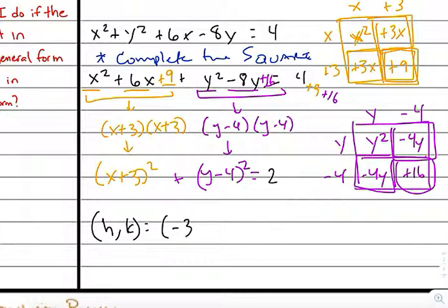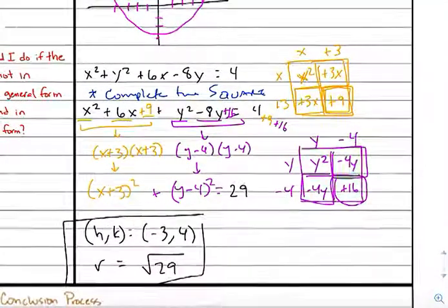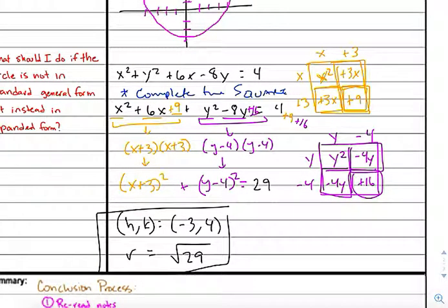On the right-hand side, I now have an addition problem. I have 4 plus 9 plus 16, which should just be 29. And so now if I want the center, h comma k, that should give me negative 3 comma 4. And if I want the radius, it should just be the square root of 29. So completing the square is definitely going to be a useful tool for us.